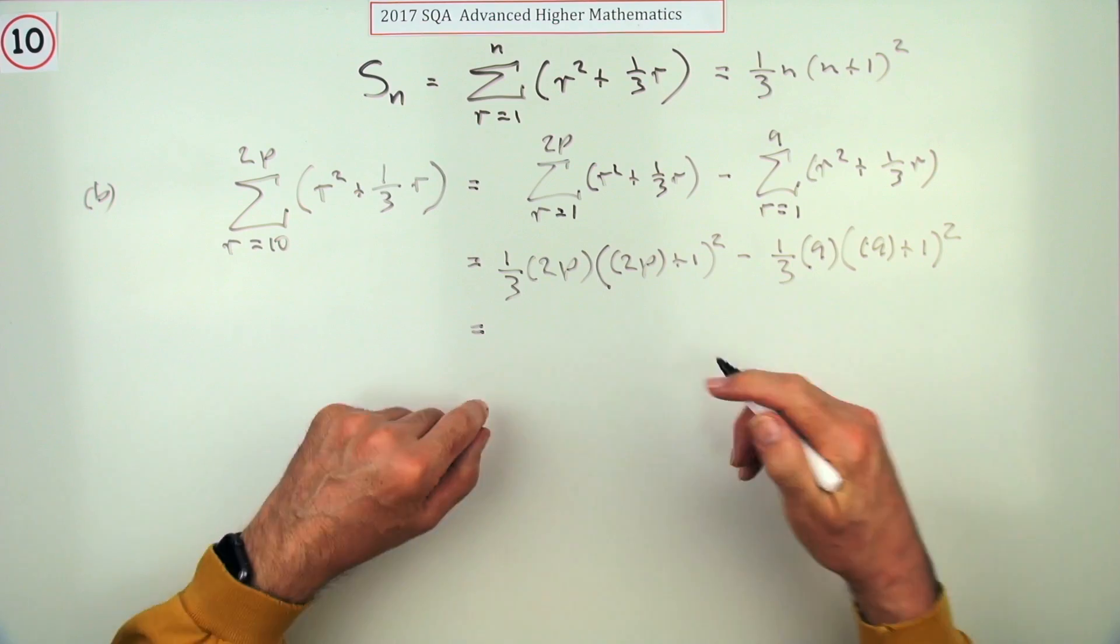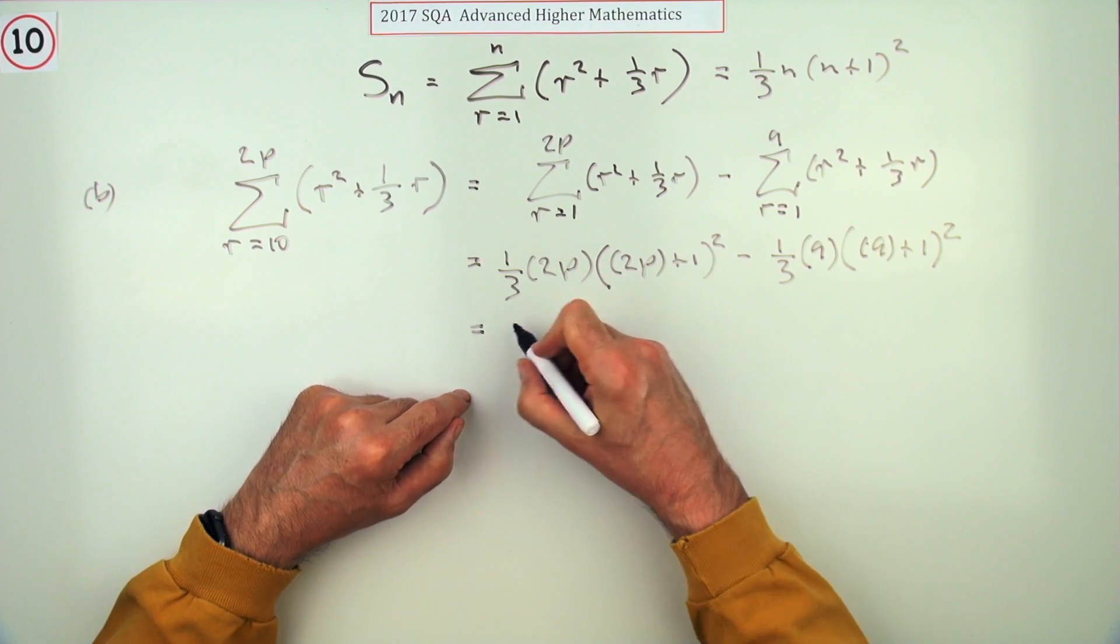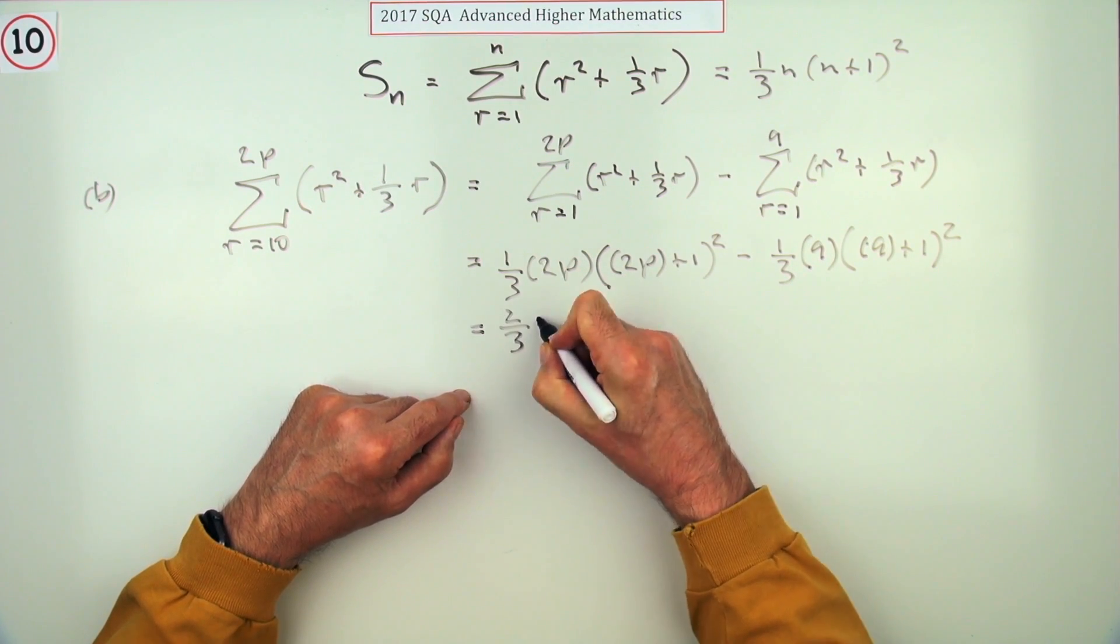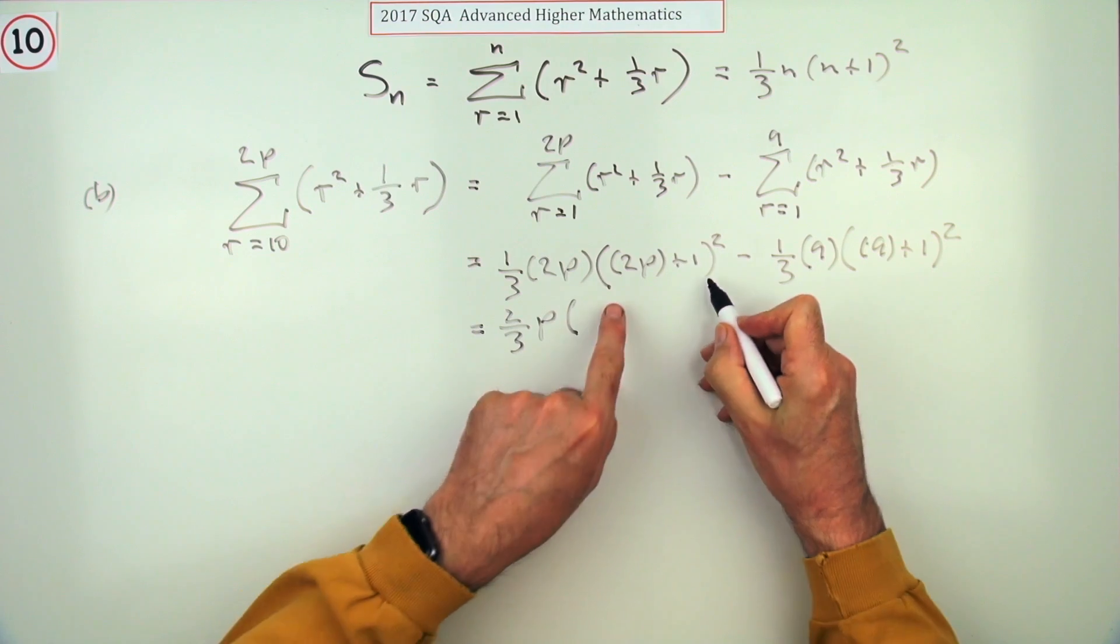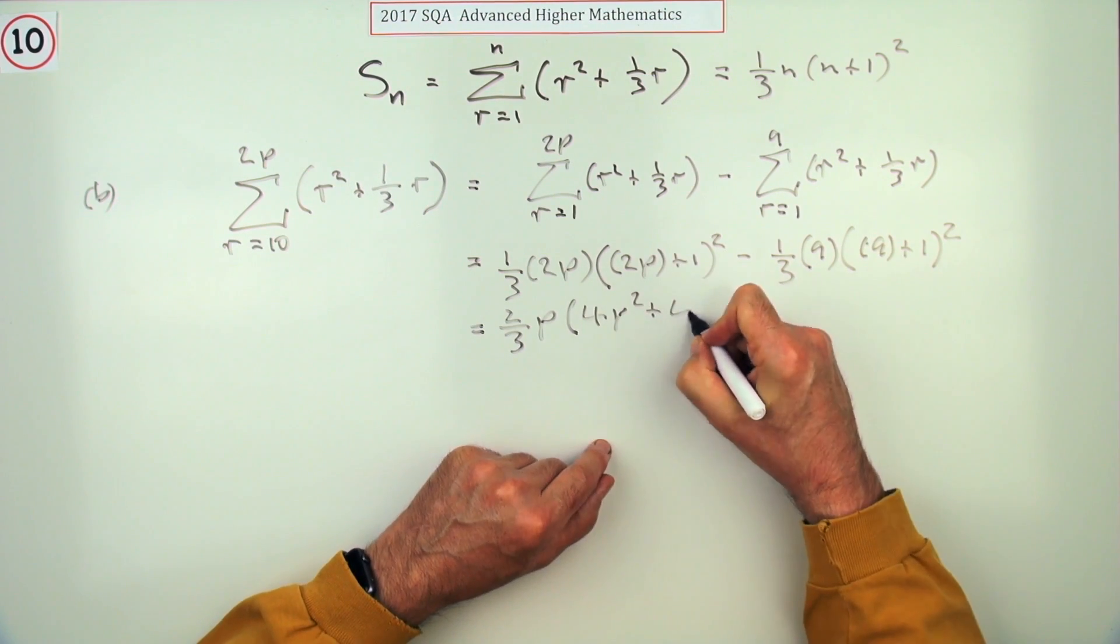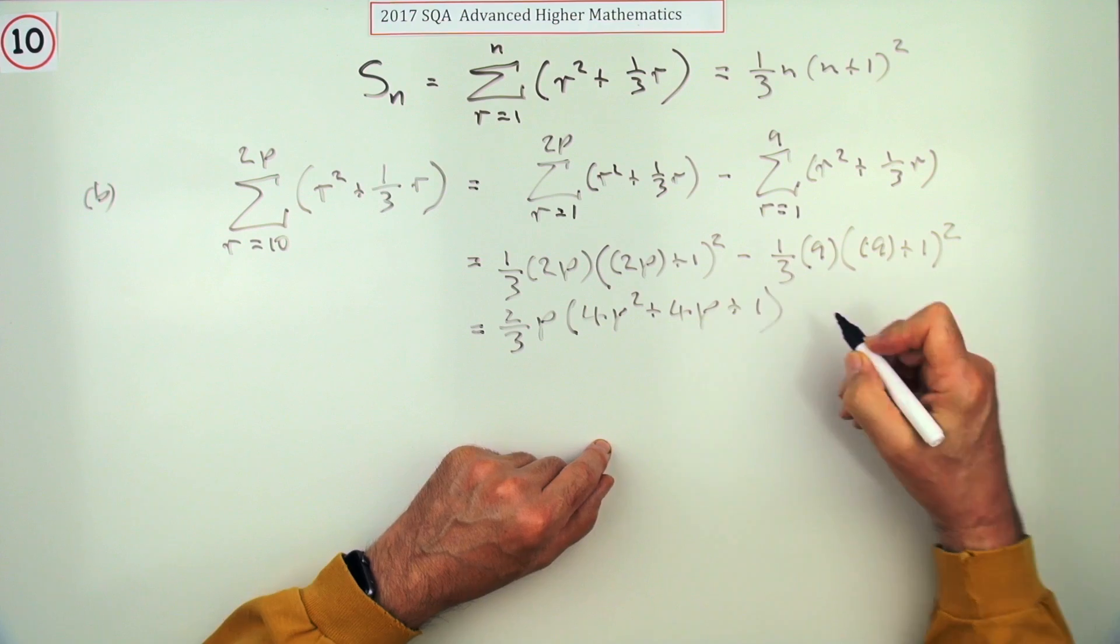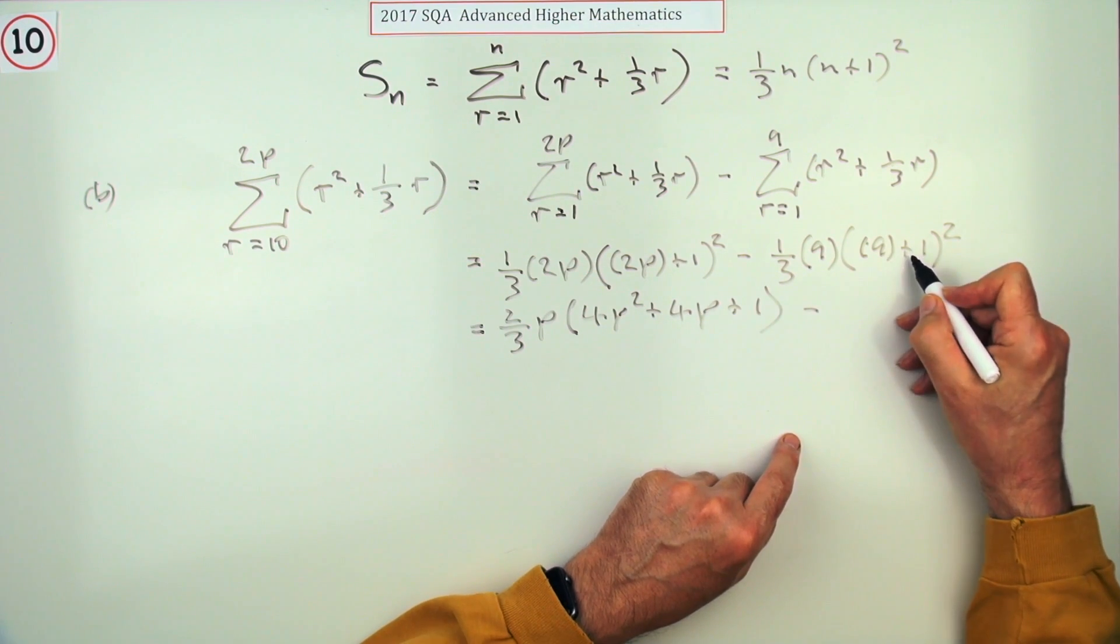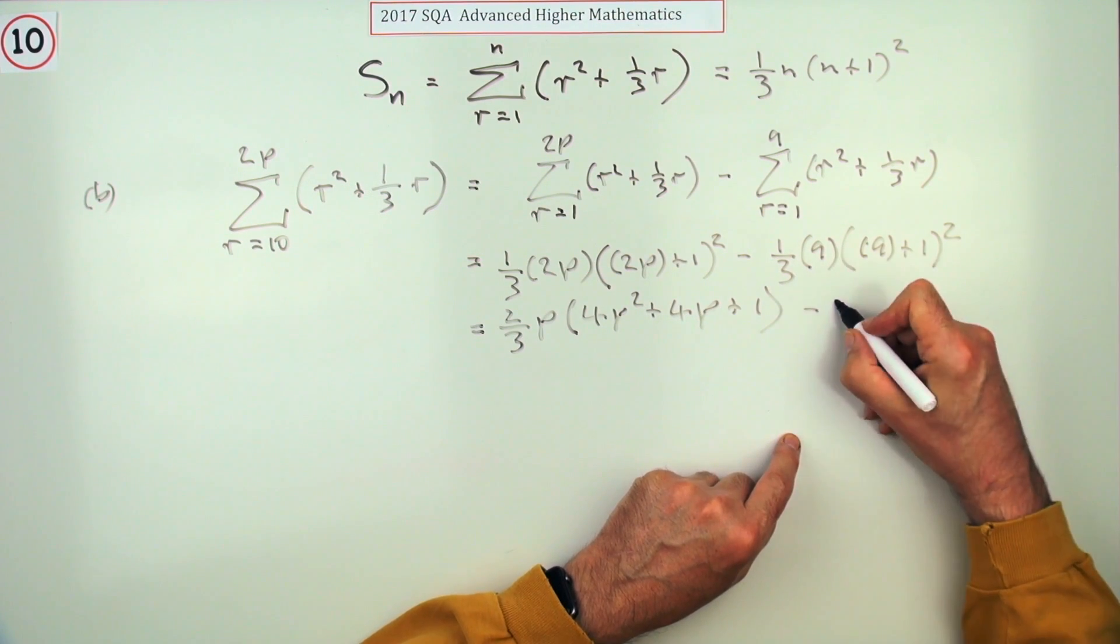One mark for this bit. This first part, I've got two thirds there. I've got two thirds of p times—now square the bracket—so it'll be four p squared plus twice the product, four p, plus one minus that part's 10, so that's 100. That goes in three, so that's 300.